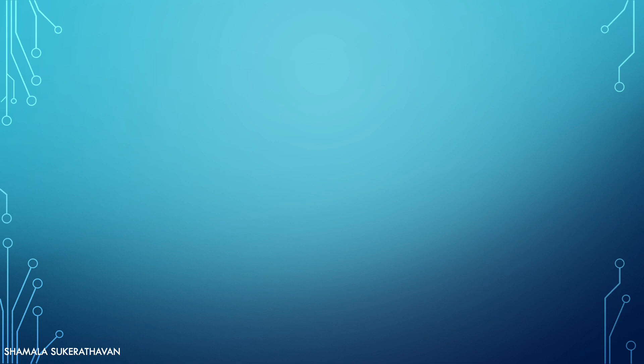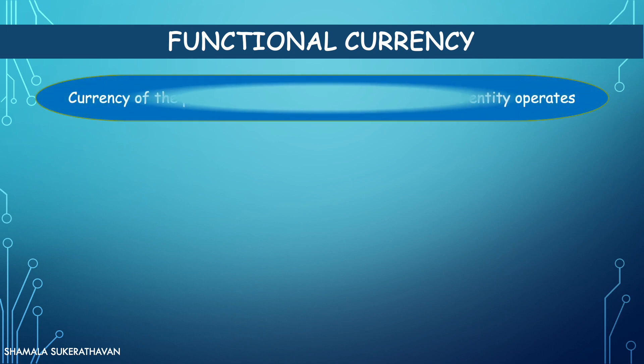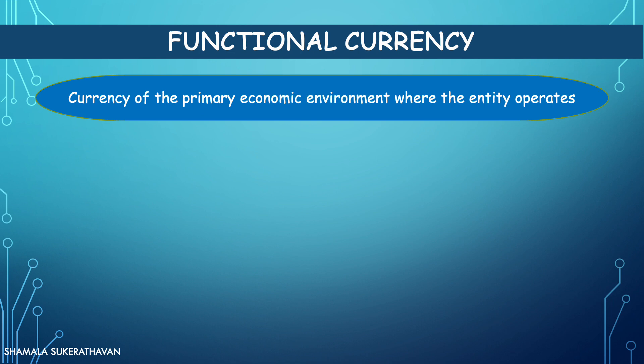So, how does IAS 21 define functional currency? IAS 21 defines functional currency as the currency of the primary economic environment where the entity operates — that being the economic environment in which it primarily generates and expends cash.